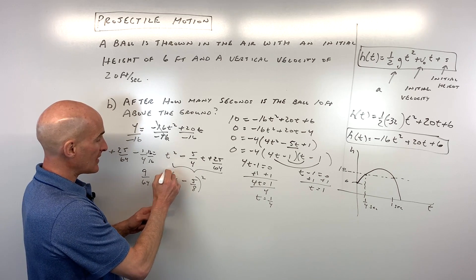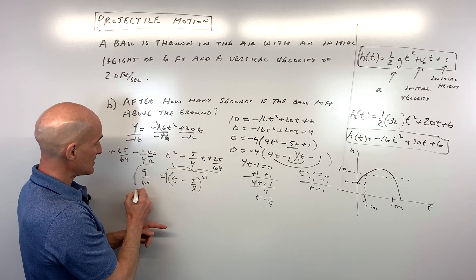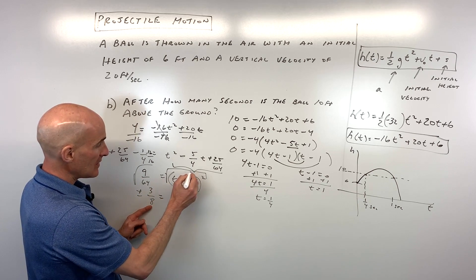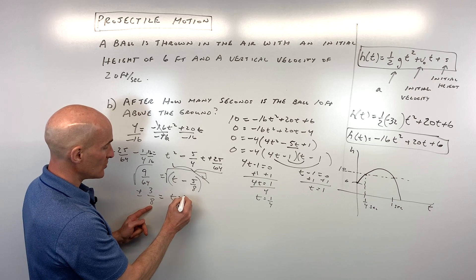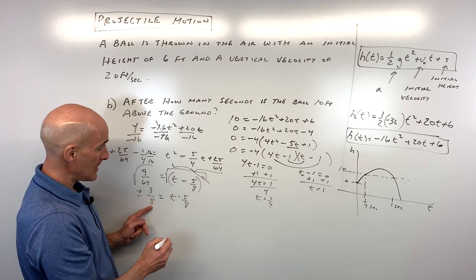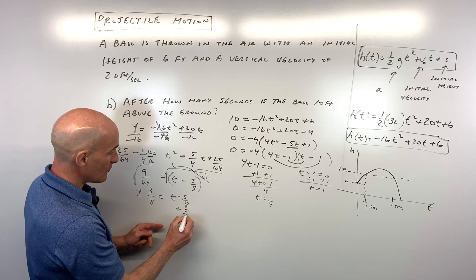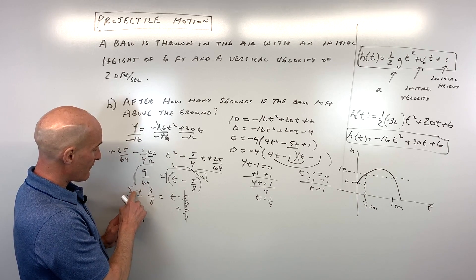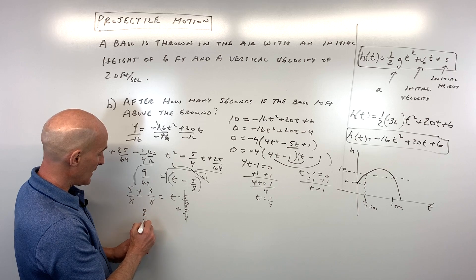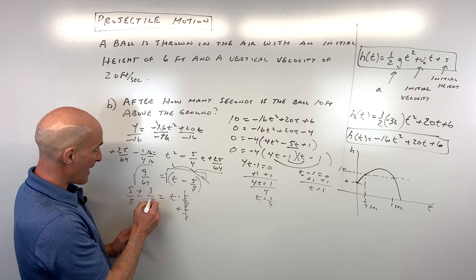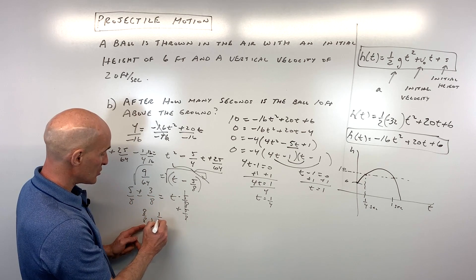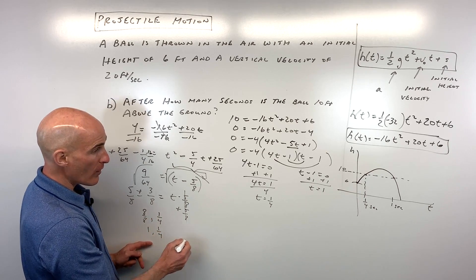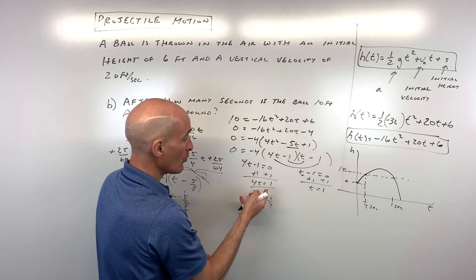Taking the square root of both sides: t - 5/8 = ±3/8 (since √9 = 3 and √64 = 8). Adding 5/8 to both sides: t = 5/8 + 3/8 = 8/8 = 1, or t = 5/8 - 3/8 = 2/8 = 1/4. We're getting one or one fourth — the same answers as when we factored. So both methods work; you could also use the quadratic formula.